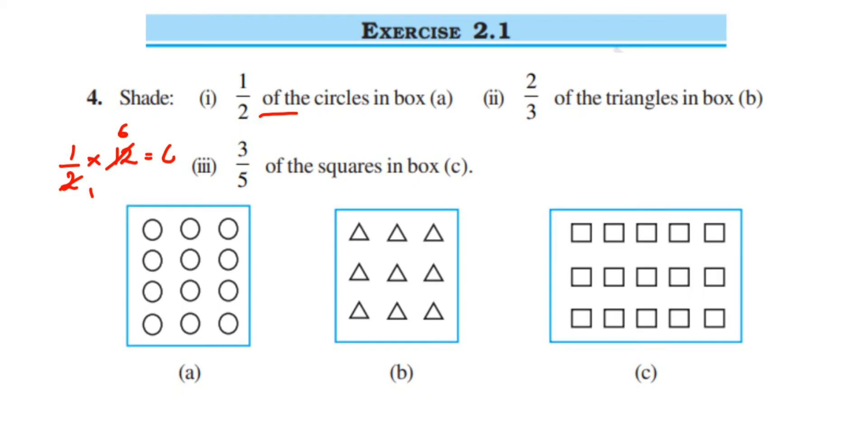Which means we have to circle 6 circles in this box. So half of 12 is 6. You have to circle any 6 circles. You can circle randomly or you can circle them in a sequence. So here goes two circles, this is third one, this is fourth one, fifth one, and this is sixth one.